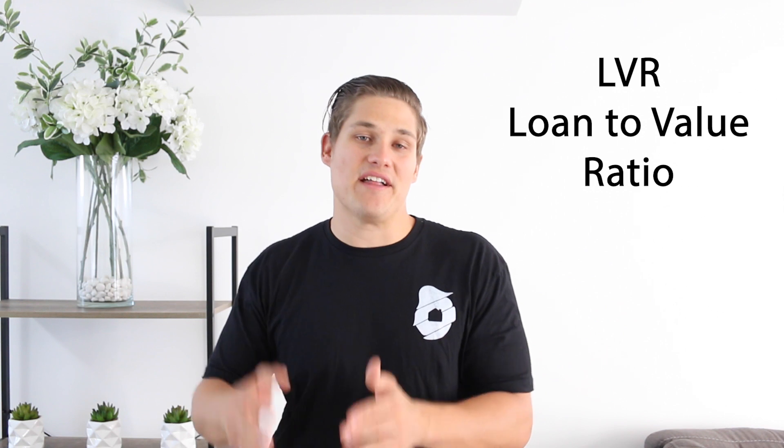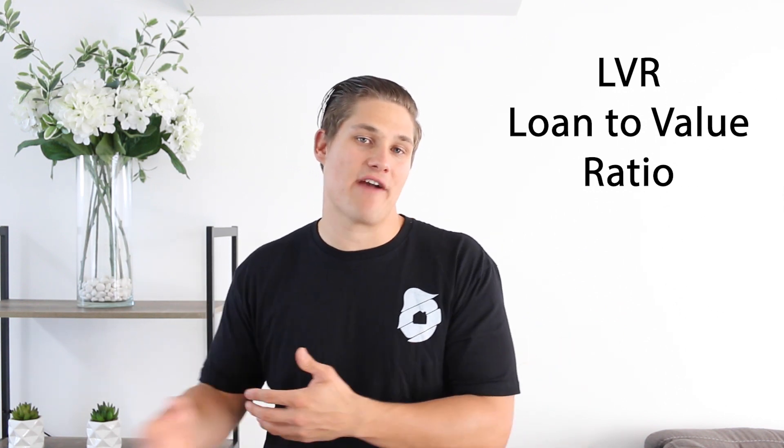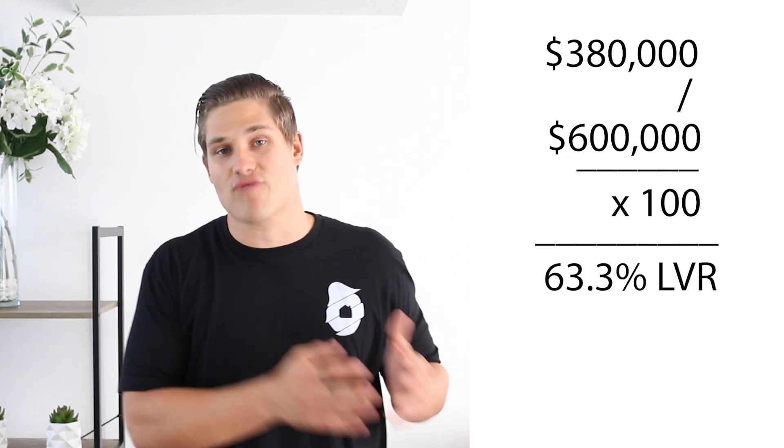This leads us to LVR, also known as loan to value ratio. Breaking this down, it's essentially the percentage of our loan in comparison to the total property value — so we're using the same two figures as equity but calculating it as a percentage instead. Taking our existing numbers, we calculate our LVR by taking our amount outstanding of $380,000 and dividing that by our total property value of $600,000, then multiplying by 100, giving us a 63.3% loan to value ratio.